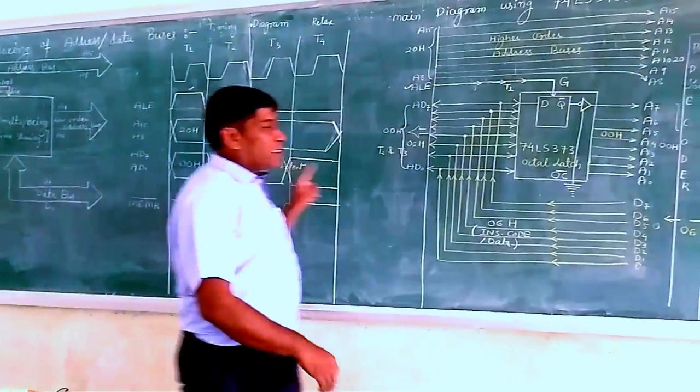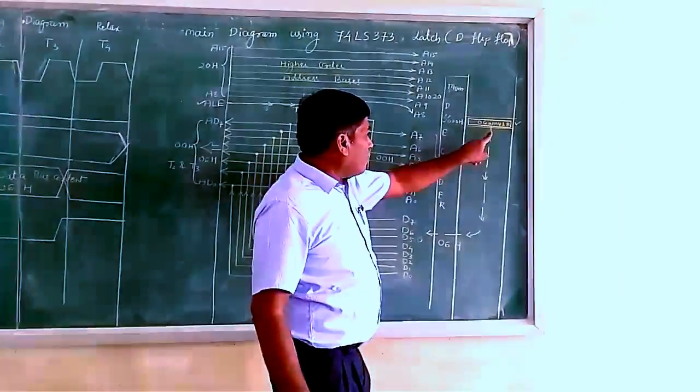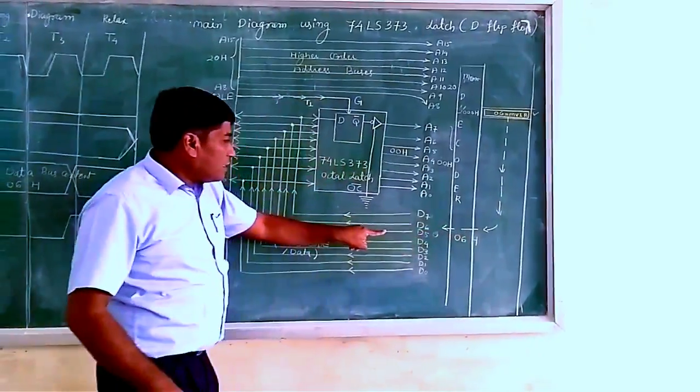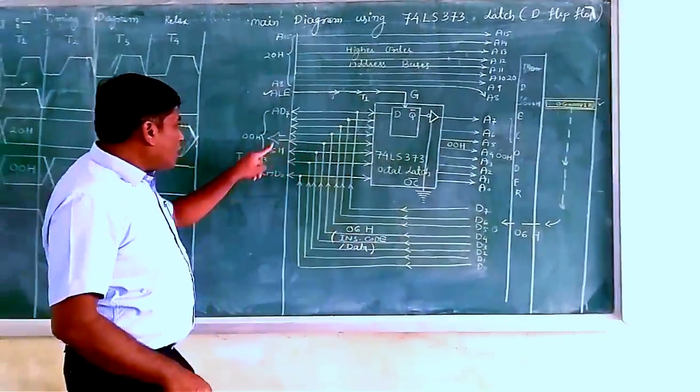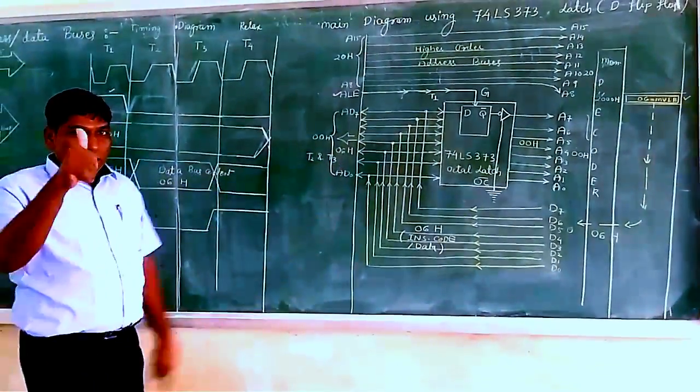the data content of this location, 2000H, will be transferred via these buses to inside the microprocessor. That's all.